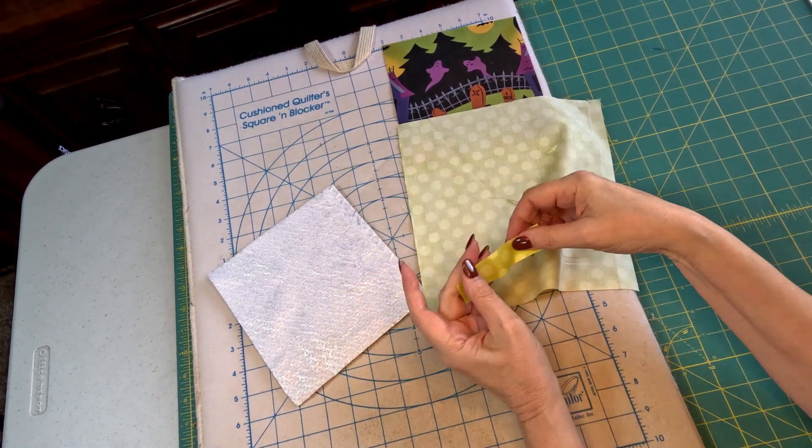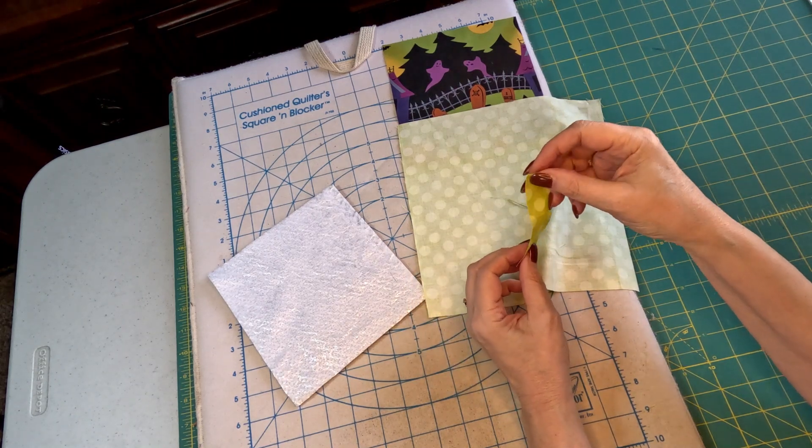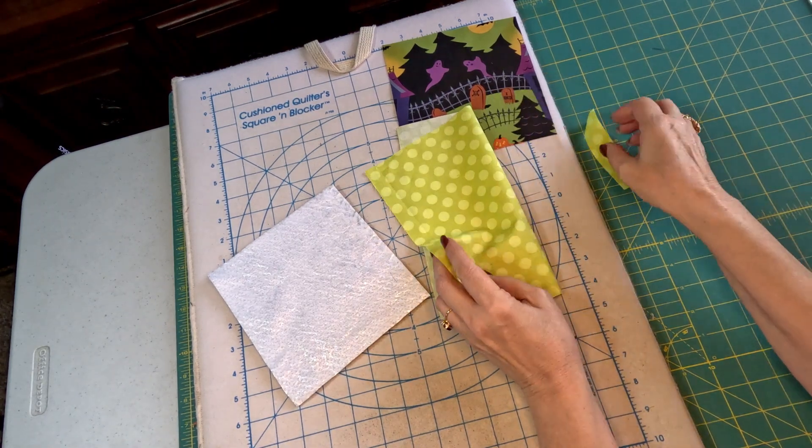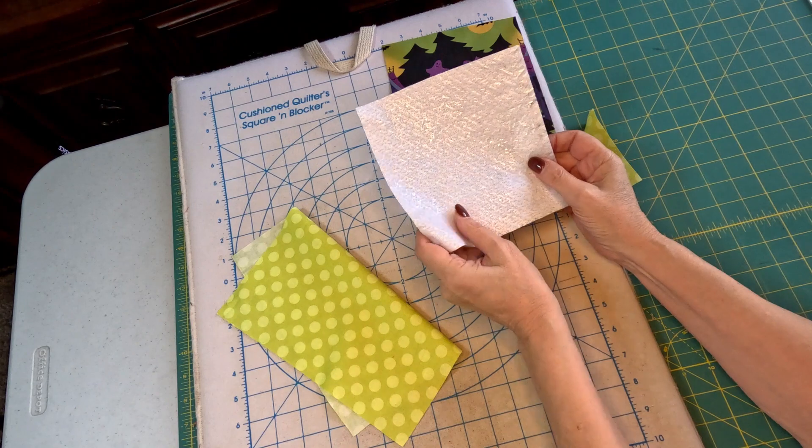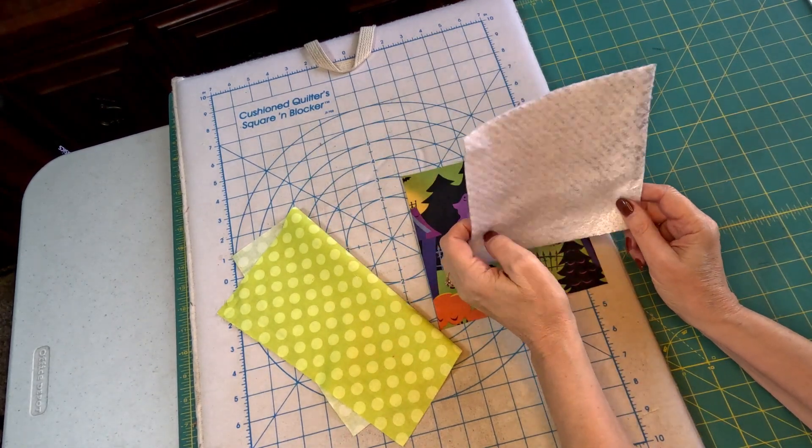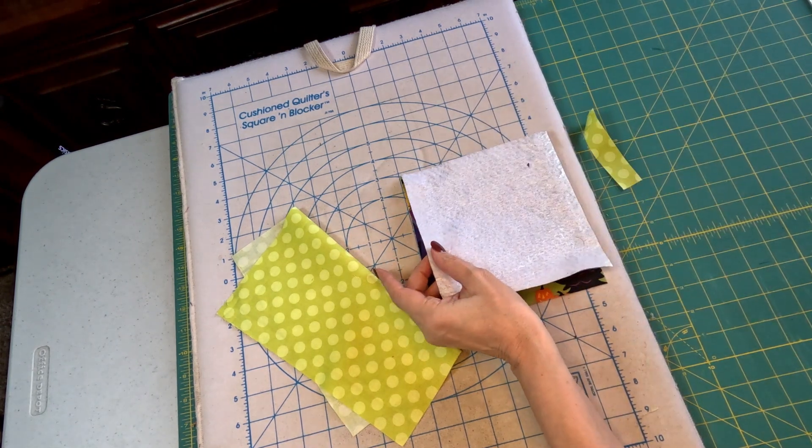We need a 4 inch by 1 inch strip that's going to be our little hanging tube. And then, you can use batting if you want, but when it's potholders, I prefer to use a product called Insulbrite.